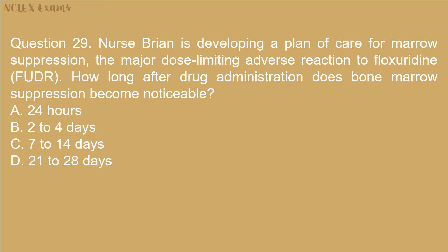Question 29: Nurse Brian is developing a plan of care for bone marrow suppression, the major dose-limiting adverse reaction to floxuridine. How long after drug administration does bone marrow suppression become noticeable? A) 24 hours. B) 2–4 days. C) 7–14 days. D) 21–28 days.